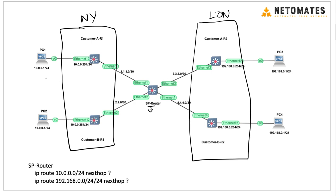Let's look at the subnets. Customer A on the New York side has the 10/24 network and on the London side 192.168. Because most customers use private IP addresses internally, there is a chance of IP address conflicts. Customer B's network is also in the same 10 network, and the other side is 192.